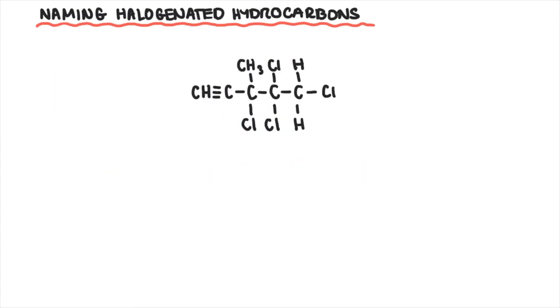Here's another example. Identify the longest carbon chain, priority is given to the triple bond, so this is given the lowest possible number. This makes it easier, so we just name it like before, ensuring it's in alphabetical order.